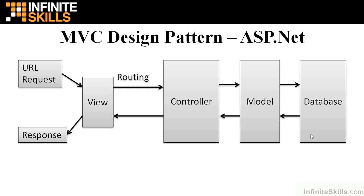In ASP.NET, there are some subtle variations. The view is requested through URL requests, and there is a routing system that takes those requests from the view and calls into the controller. The controller has action methods that are called from the view through the routing. The controller will then interact with the model, and potentially there's a database backing that model. You could consider the model to be a business layer that sits in between the database and the controller. The controller will then extract some data from the model and send it back out to the view, which sends it out as an HTTP response.